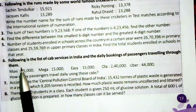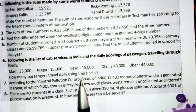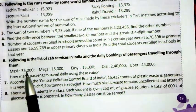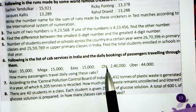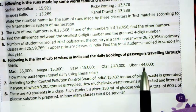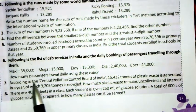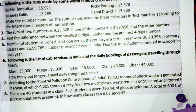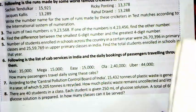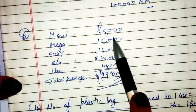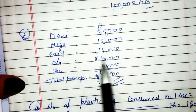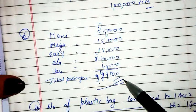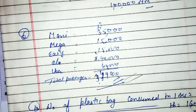In the next sum: following is the list of cab services in India with daily passenger bookings — Meru: 35,000; Mega: 15,000; Easy: 15,000; Ola: 40,000; Uber: 44,000. How many passengers travel daily using these cabs? Hum in sab values ko add kar denge, to total passengers aa jayenge.